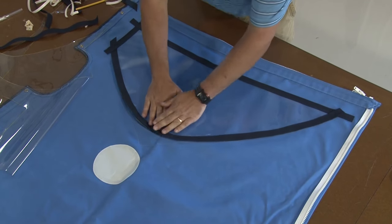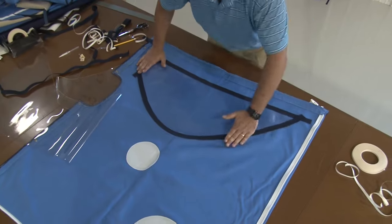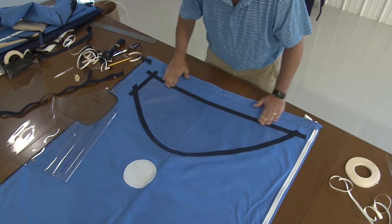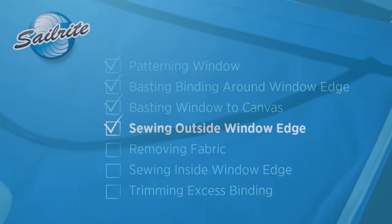So if you have a canvas piece that needs a window, this is the appropriate way to do it. You will notice that Brian has been careful to make sure that it is laying flat and that it is stuck down well onto the canvas.